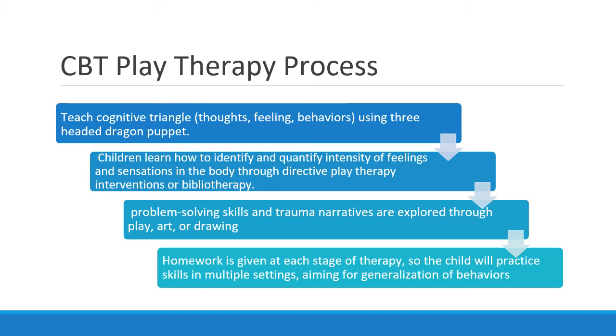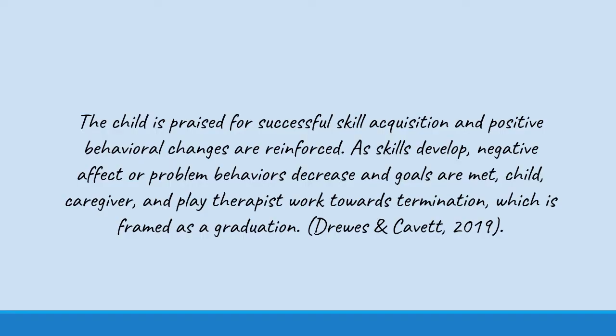With young kids, you use something like a three-headed dragon puppet, or even the three-headed dog Cerberus from mythology. Then children learn how to identify and quantify the intensity of feelings and sensations in the body through directive play therapy interventions or bibliotherapy. Next, problem-solving skills and trauma narratives are explored through play, art, and drawing. At each stage, homework is given so the child practices skills in multiple settings, not just in the therapy room, aiming to generalize these behaviors. The child is praised for successful skill acquisition, and positive behavioral changes are reinforced. As skills develop, negative affect or problem behaviors decrease and goals are met. The child, caregiver, and play therapist work towards termination, which is framed as graduation — from Drews and Cabot, 2019.